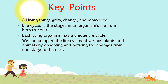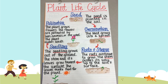Each living organism has a unique life cycle. We can compare the life cycles of various plants and animals by observing and noticing the changes from one stage to the next. Let's review the plant life cycle. Stage number one is the seed — the seed is planted in the soil. Then stage two happens: germination.